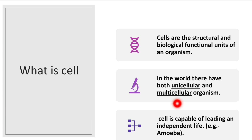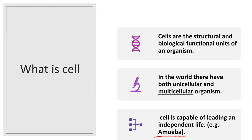For example, blood contains red blood cells, or RBC. The function of RBC is to transport oxygen and carbon dioxide. The third point is: a cell is capable of leading an independent life.